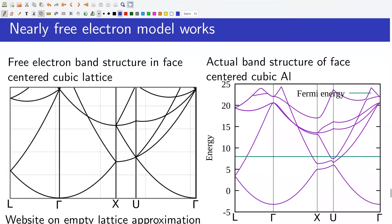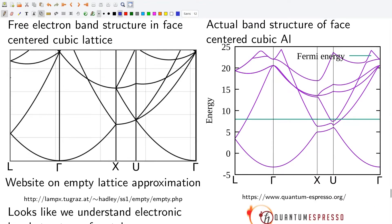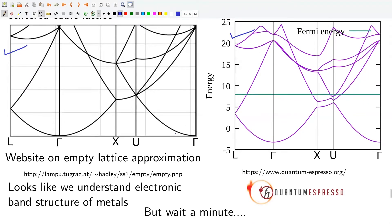The nearly free electron model is not just a toy model — it indeed works for metals like aluminum. The first diagram from the left shows the free electron band structure in a face-centered cubic lattice. The second diagram shows the actual band structure of aluminum generated via ab initio calculations using the Quantum ESPRESSO package. Notice the close match between the free electron and actual band structure. Indeed, the periodic potential has some effect, but the effect is not too strong, and the match is clearly visible.